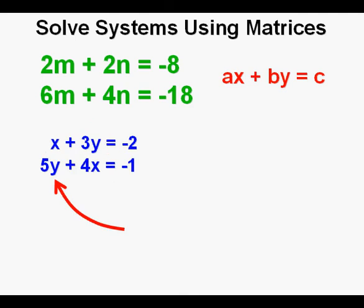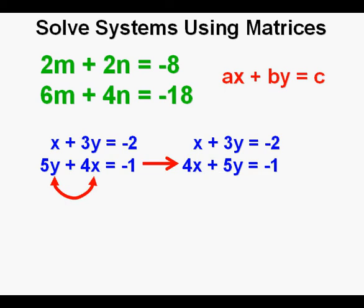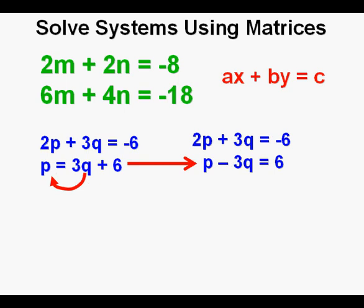For solving systems in standard form, using matrices is a great approach. You must make sure that like terms are lined up above each other. If the bottom equation has the y term first, use the commutative property of addition to switch the x and y terms so they align with the like terms in the other equation. For a mixed system, convert slope-intercept form to ax plus by equals c by moving the variable to the other side and changing its sign.